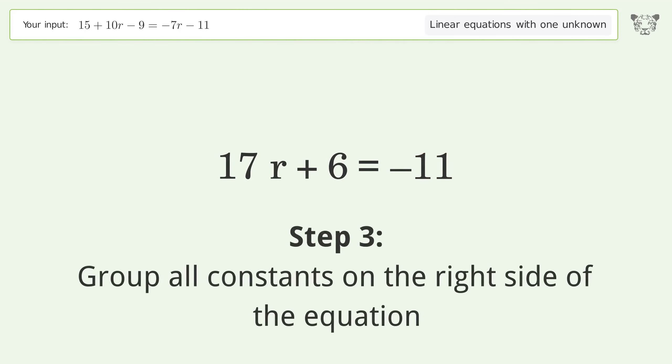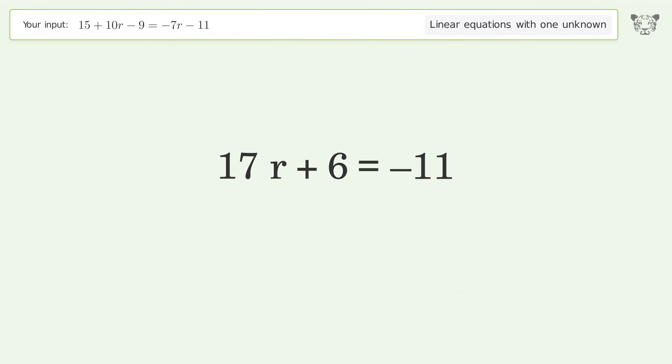Group all constants on the right side of the equation. Subtract 6 from both sides. Simplify the arithmetic.